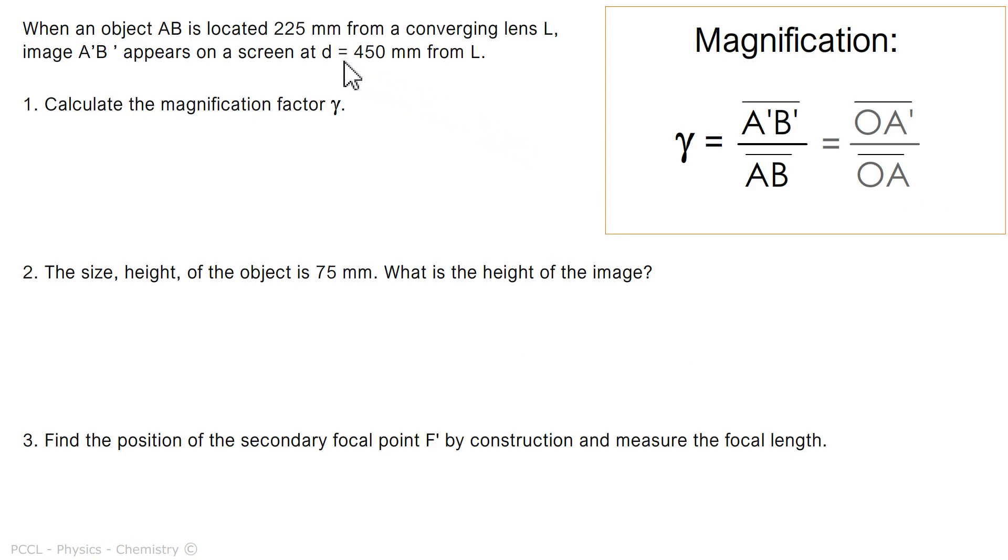We have information on distances here, not on the sizes. So the object is 225 mm while the image of this object is 450 mm from a lens, which we don't know anything about yet. But we can answer the first question about magnification. Precisely, thanks to the second part here of my relation, by making the ratio of the distances OA' by OA.